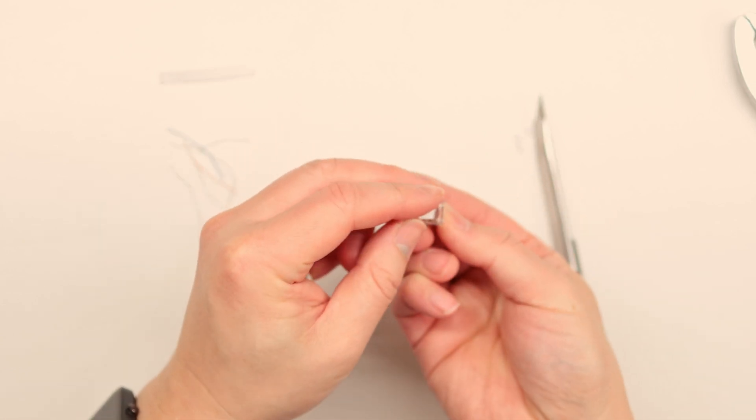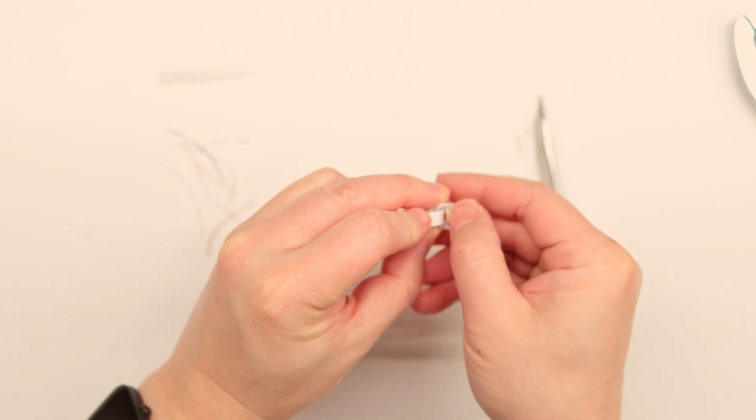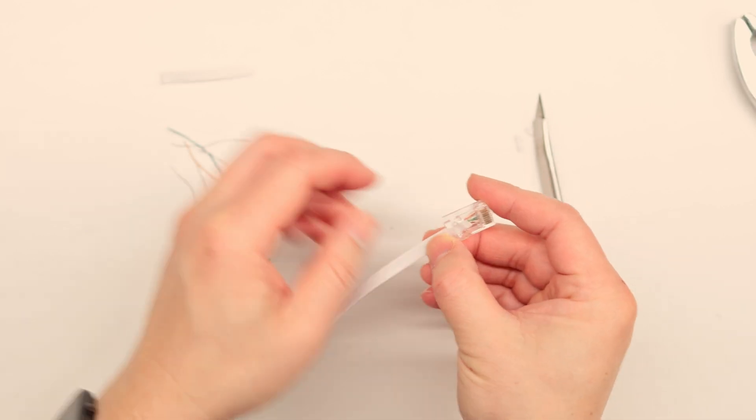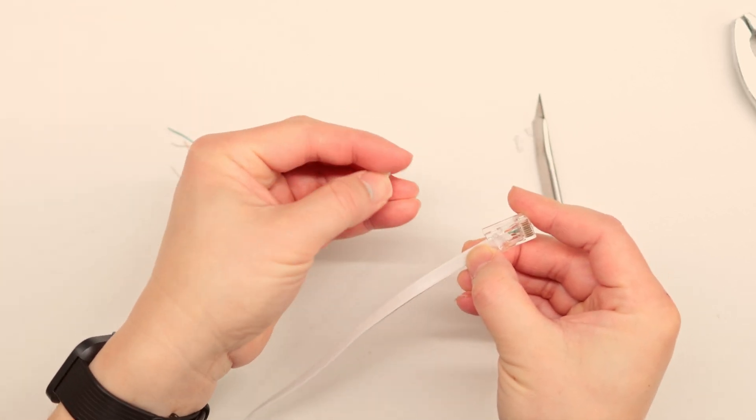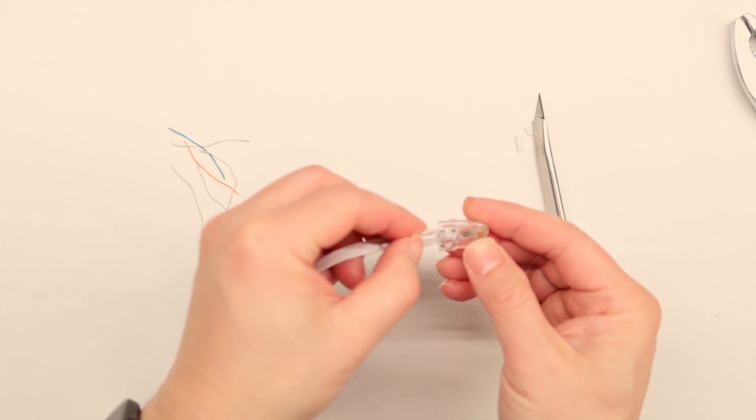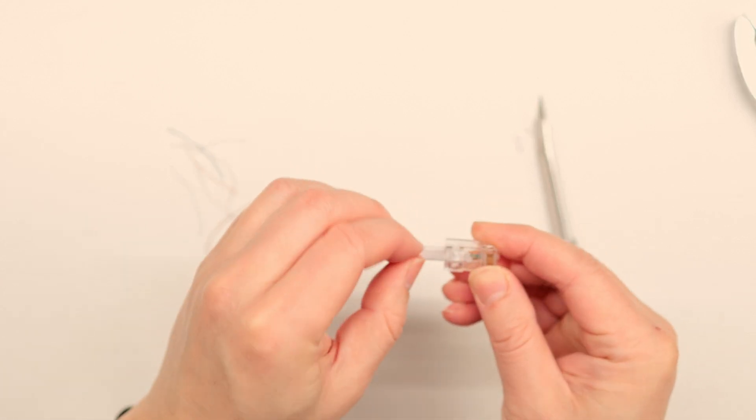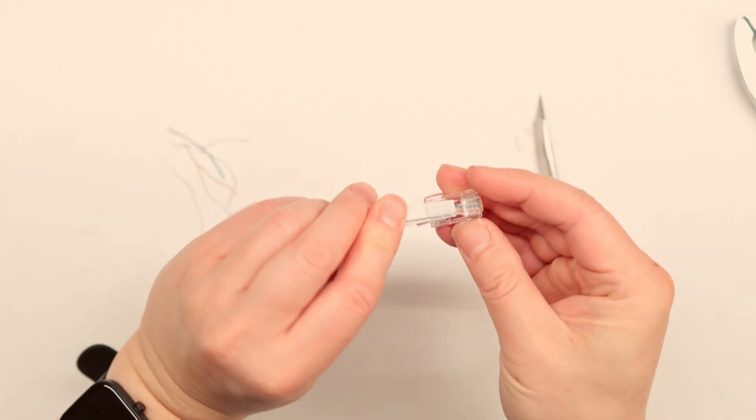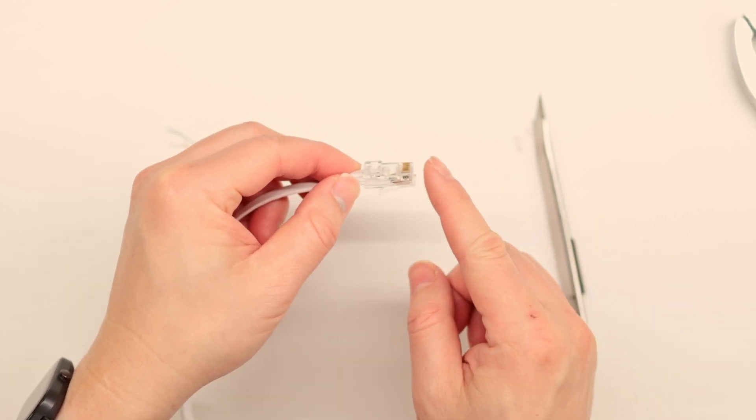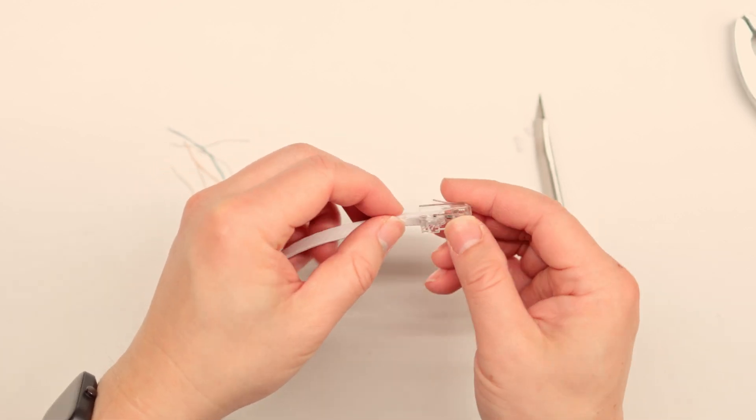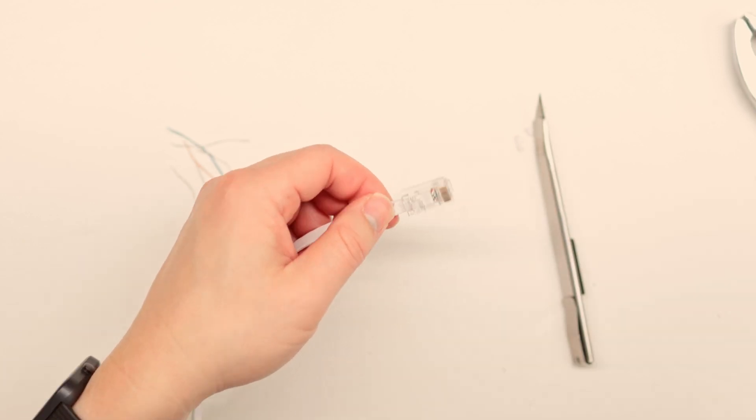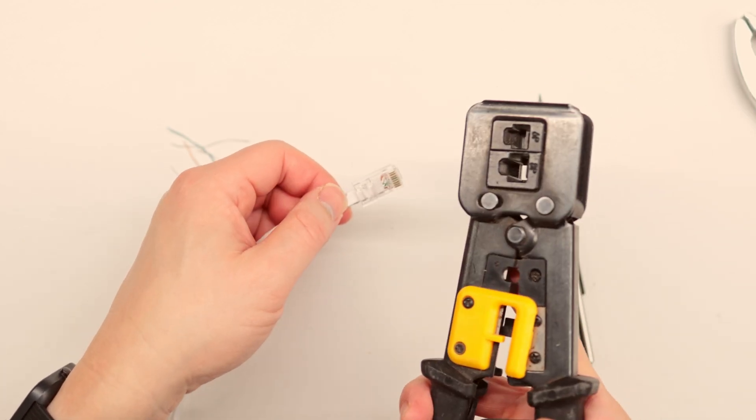But you can see right here, there's a lot of excess. That's why we save the other piece. Fold it in half and then jam it straight in. Verify one more time that all of the connections are hitting all the way to the end. And then use the crimper to terminate it as you normally would.